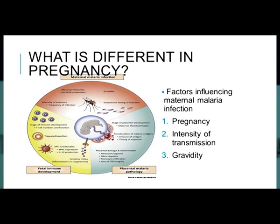The second important factor is intensity of transmission. We again look at holoendemic areas and mesoendemic areas. Holoendemic areas mean increased exposure and increased immunity, but also milder disease. The median prevalence in a holoendemic area is 28%. In a mesoendemic area, you have less exposure, less immunity, meaning more severe disease.